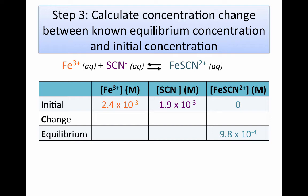Step three is to calculate the concentration change for the species where you know both the initial and equilibrium concentrations. For iron thiocyanate complex, we know both values — we're increasing from zero to 9.8 × 10⁻⁴ molar. So we write in a change of plus 9.8 × 10⁻⁴ molar.